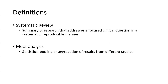Now let's look at what a systematic review is and what a meta-analysis is. A systematic review is the method by which we look for research that addresses a focused clinical question — a summary of research done in a systematic and reproducible manner. The methodology and rigor by which we select studies that look at a particular focused clinical question is the systematic review. A meta-analysis is a statistical analysis of the aggregation of all results from different studies — the statistical pooling of results from different studies.